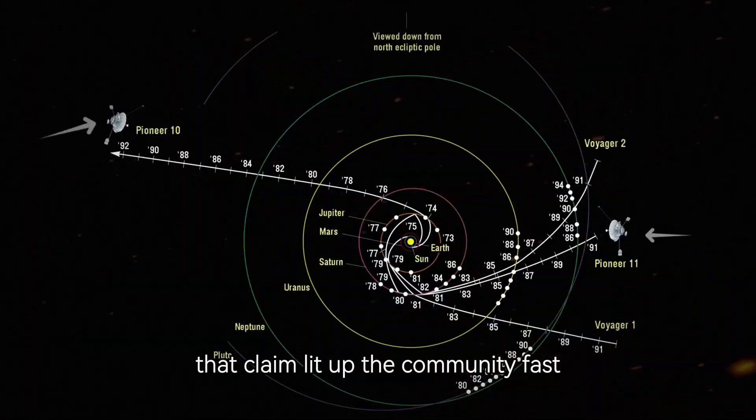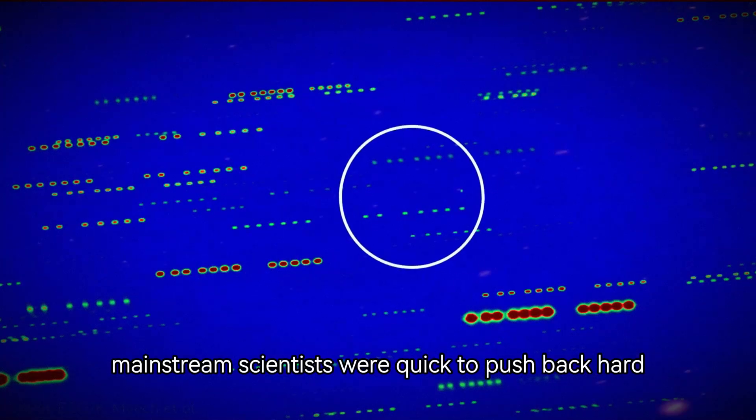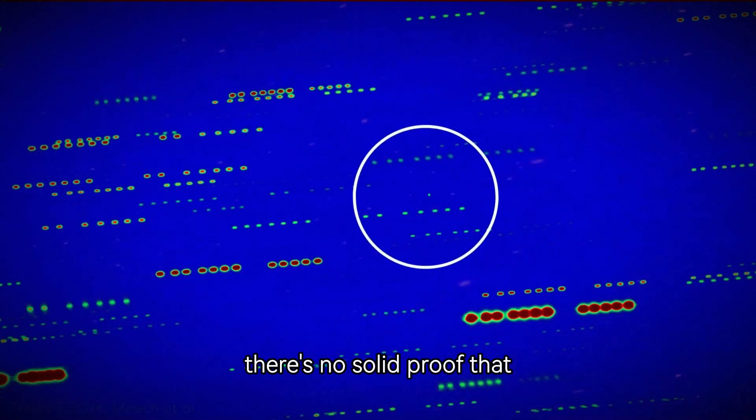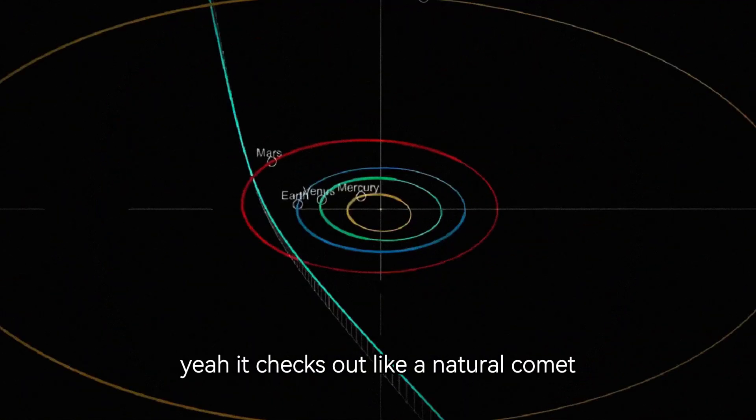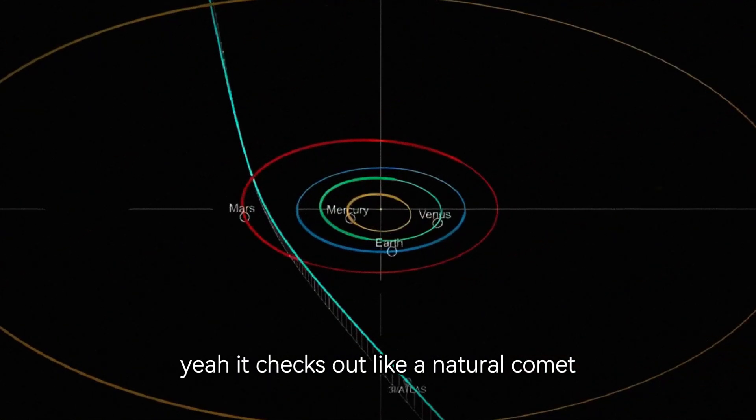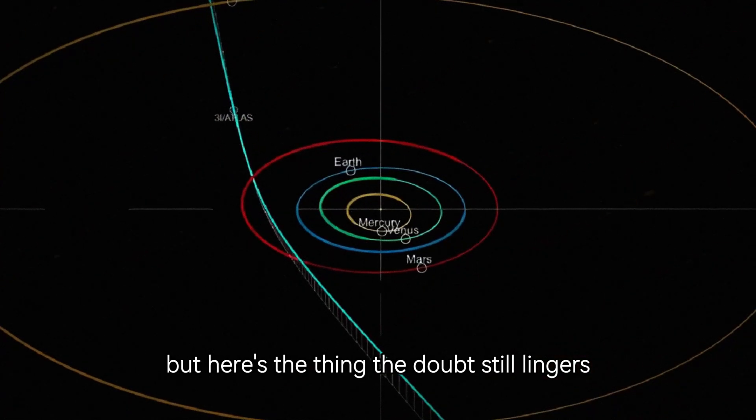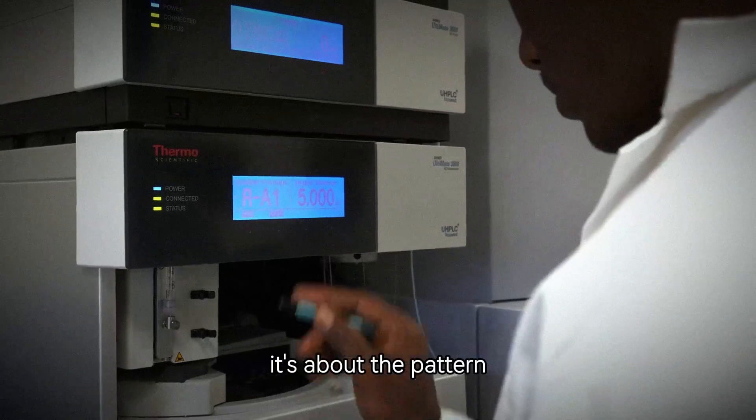And yeah, mainstream scientists were quick to push back hard. Most scientists still say there's no solid proof that 3i Atlas is artificial. Its activity checks out like a natural comet. But here's the thing, the doubt still lingers, because this isn't just about one object, it's about the pattern.